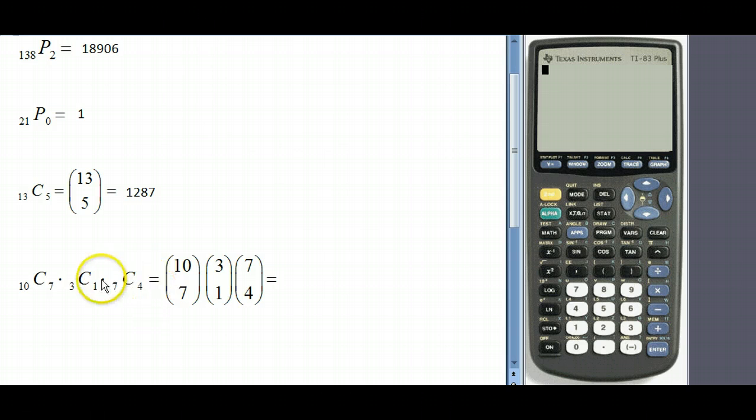Let's move on to the last one. For here we see that we have a combination of 10 things grouped seven at a time, multiplied by a combination of three things grouped one at a time, multiplied by a combination of seven things grouped four at a time. When we do it here we're just going to do it just like how we did these other three but we're just going to multiply in between.